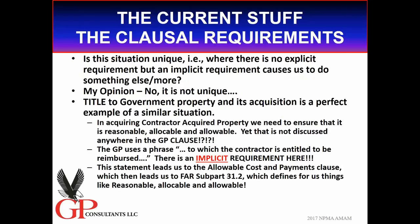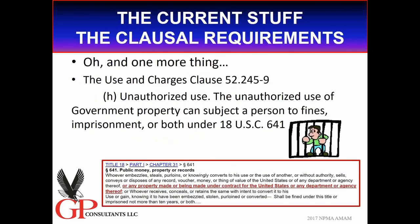Is this situation of having implicit requirements unique? No. When we talk about title under the government property clause, we always say the government has title to all property under a cost-reimbursement contract — but that's not quite right. The government takes title to property that is reasonable, allocable, and allowable, though it doesn't say that within the government property clause. The clause uses the phrase 'to which the contractor is entitled to be reimbursed,' and those four words take us to the allowable cost and payment clause, which takes us to FAR 31.2, which defines reasonable, allocable, and allowable — providing specific examples for material, special tooling, and special test equipment.